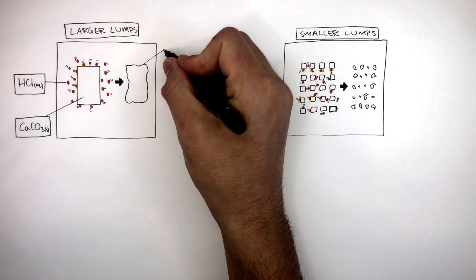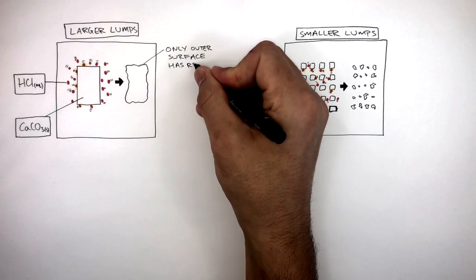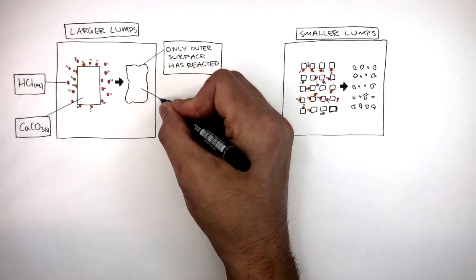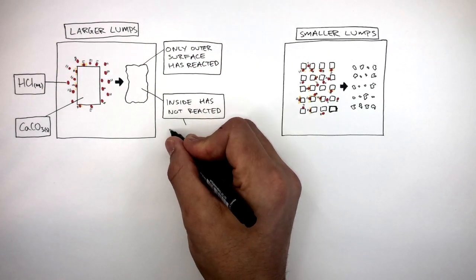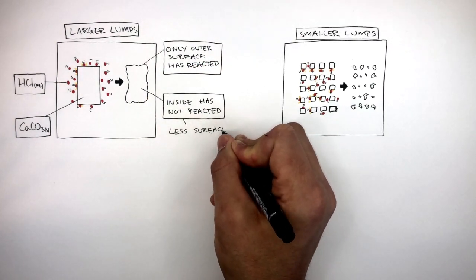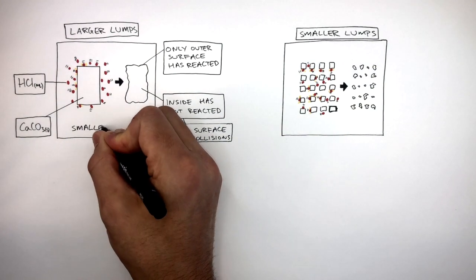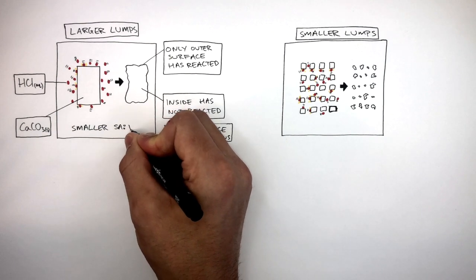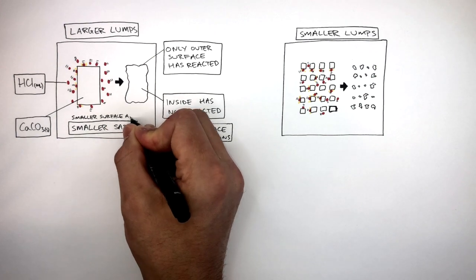With the larger lumps, only the outer surface has reacted. The inside has not reacted, as there is less surface for collisions. This is down to the larger lumps having a smaller surface area to volume ratio, or a smaller surface area.